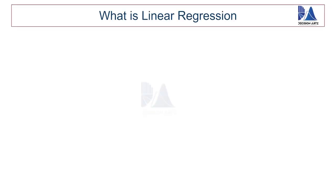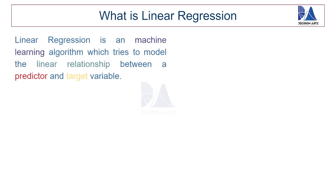So, what exactly is linear regression? The most common answer that I got in my interviews is this: Linear regression is a machine learning algorithm which tries to model the linear relationship between a predictor and a target variable. Well, to be honest, your answer was insufficient and vague. This is all that I can gather out of it.